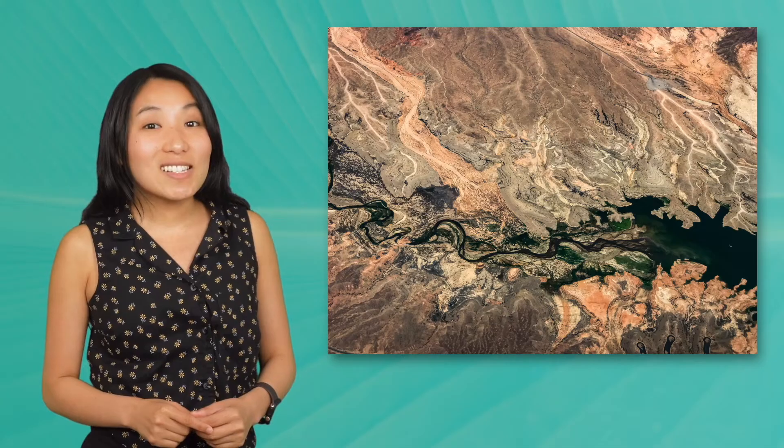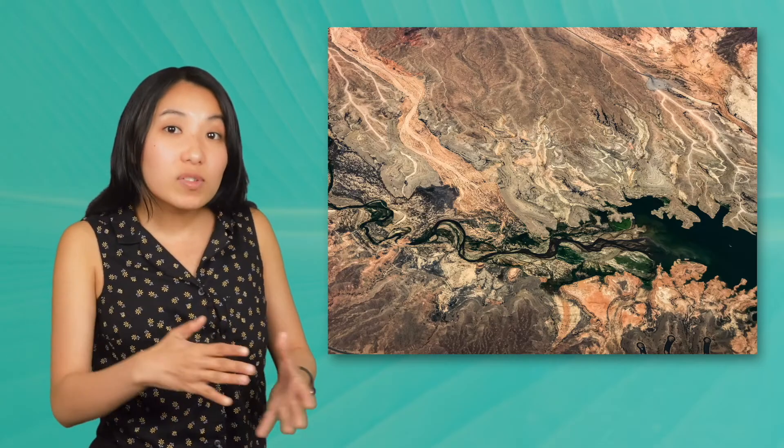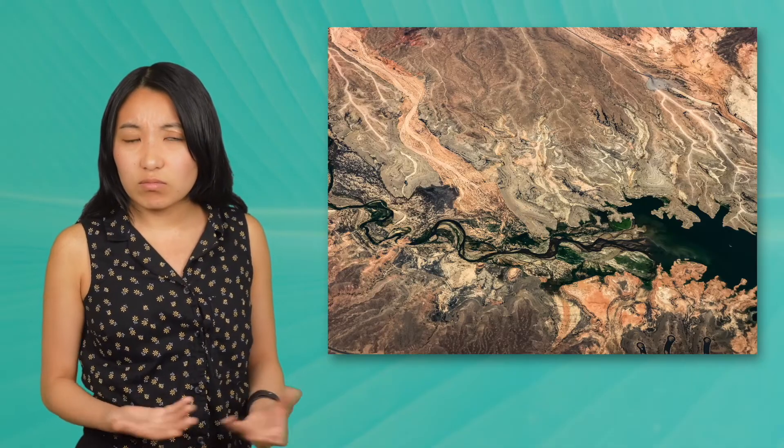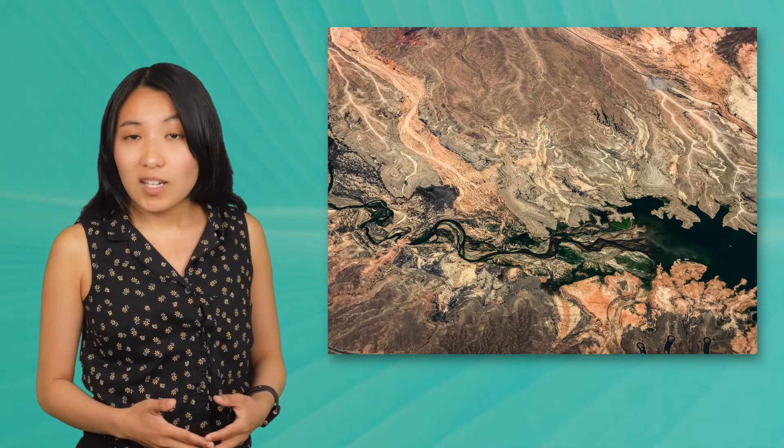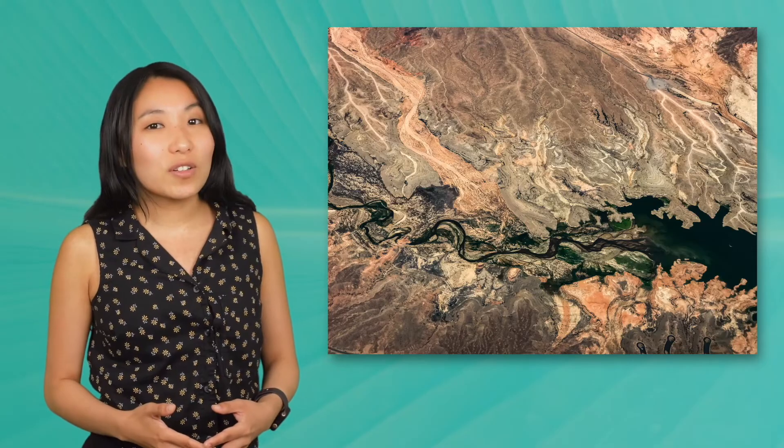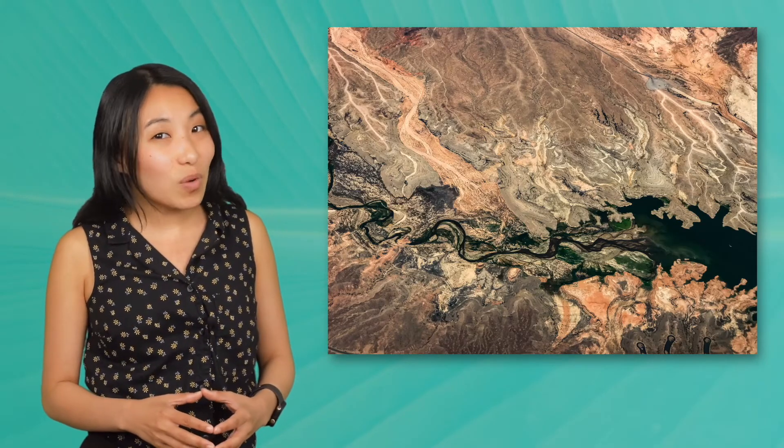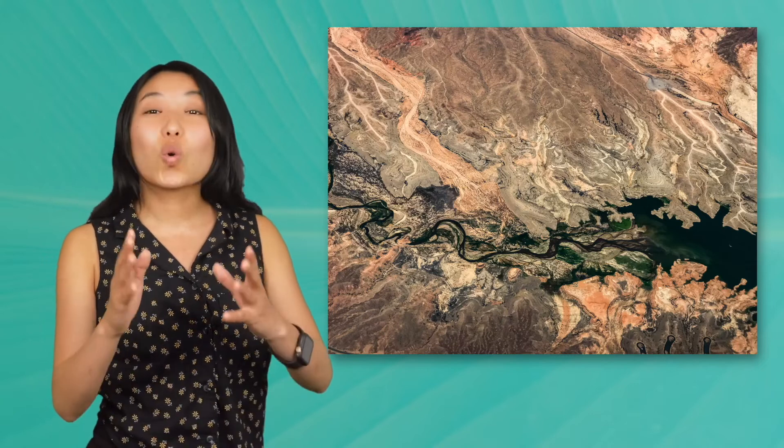We can clearly see how surface fresh water flows into the Colorado River. But there's another source of fresh water feeding this watershed, even if we can't see it. Think about the other sources of fresh water on Earth. What other type of water might be feeding this watershed? Groundwater.